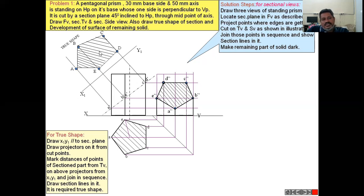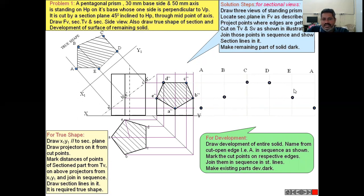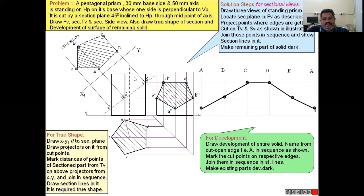Now we need to develop the surface for the sectioned solid. To draw the development, first draw five rectangles side by side — since it is a pentagonal prism, we get five rectangles with the given side length and height. Then from the heights, transfer the distances for points A′, B′E′, C′D′ from the front view onto the corresponding rectangles.